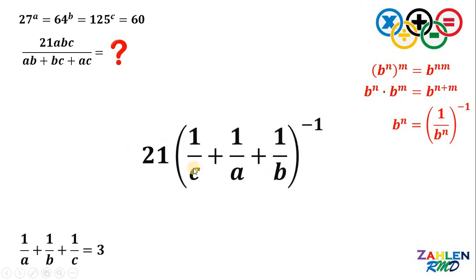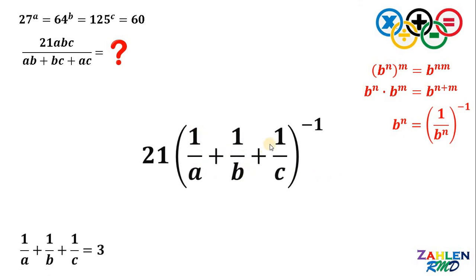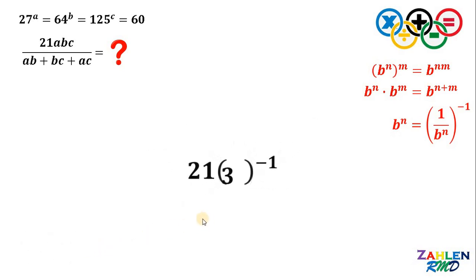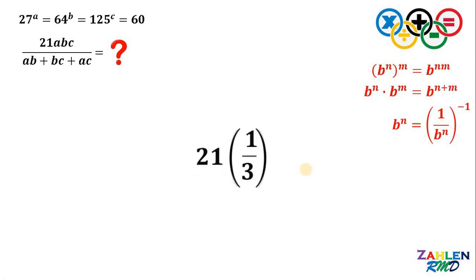Now, take note that 1 over C plus 1 over A plus 1 over B is just the same as 1 over A plus 1 over B plus 1 over C. And we know the value of 1 over A plus 1 over B plus 1 over C — this is just 3. So now we have 21 times 3 raised to negative 1. And we know 3 raised to negative 1 is just 1 third. So 21 times 1 third gives us 7.